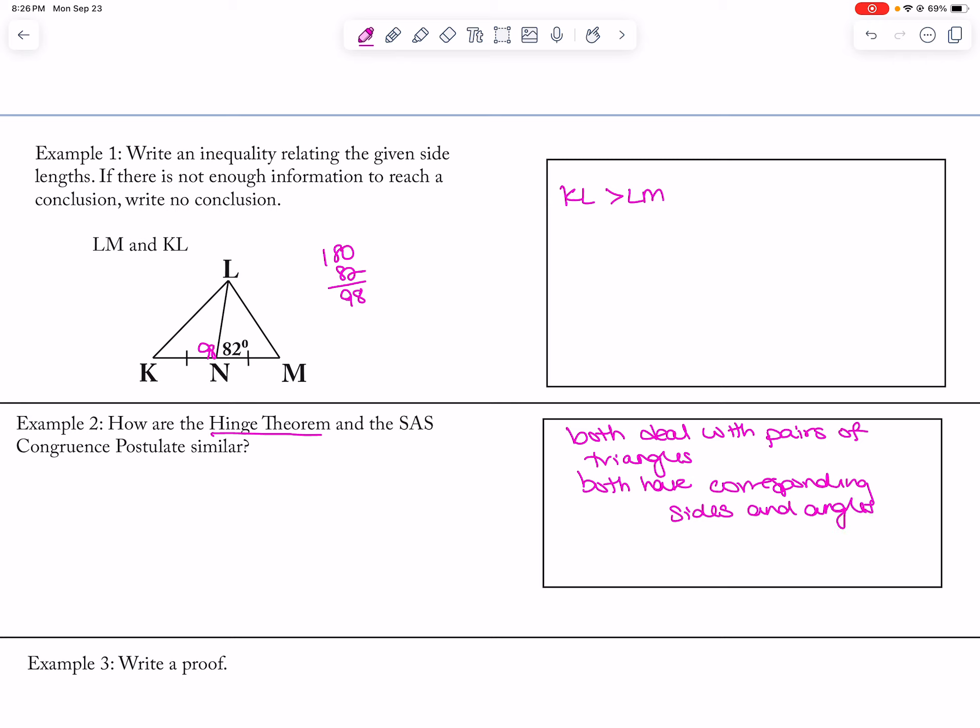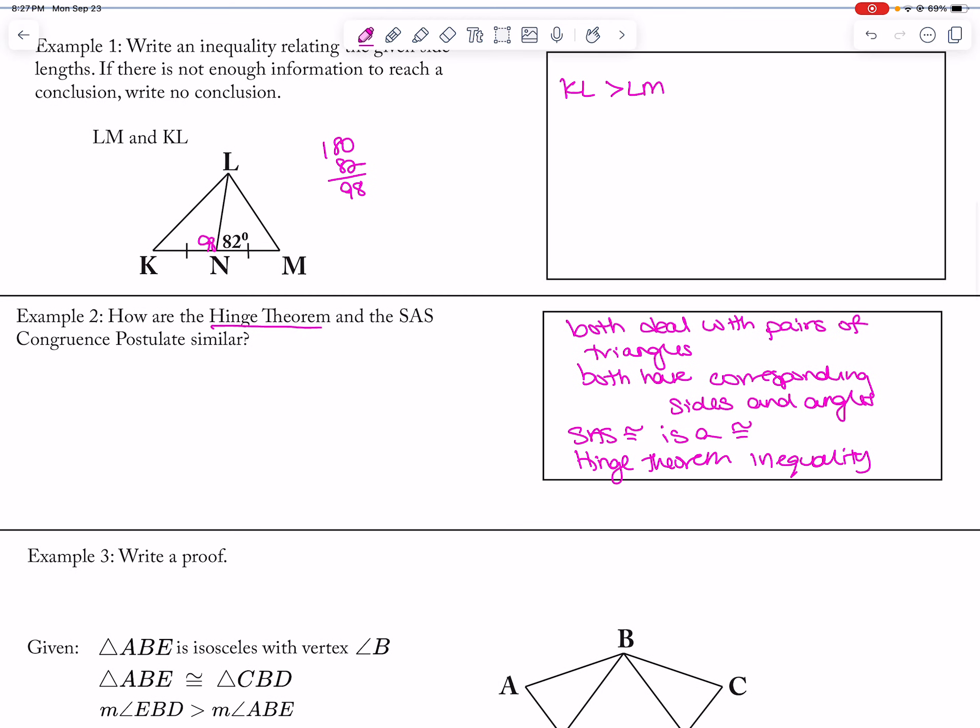But one is congruent. So Side-Angle-Side congruence is a congruence statement, so it's an equality type of statement, whereas the Hinge Theorem is an inequality. So one side will be bigger than the other, or one angle measurement will be bigger than the other.